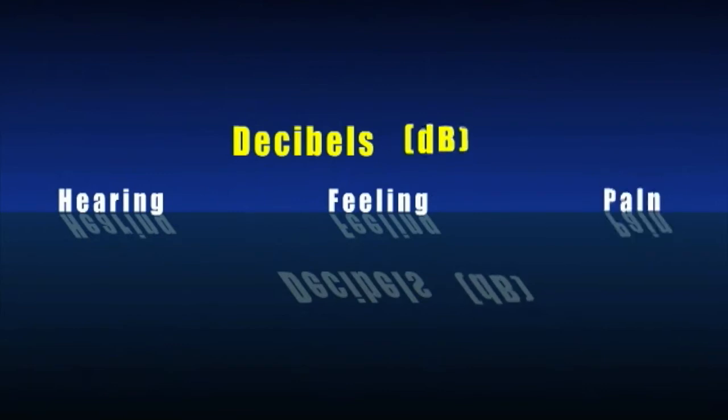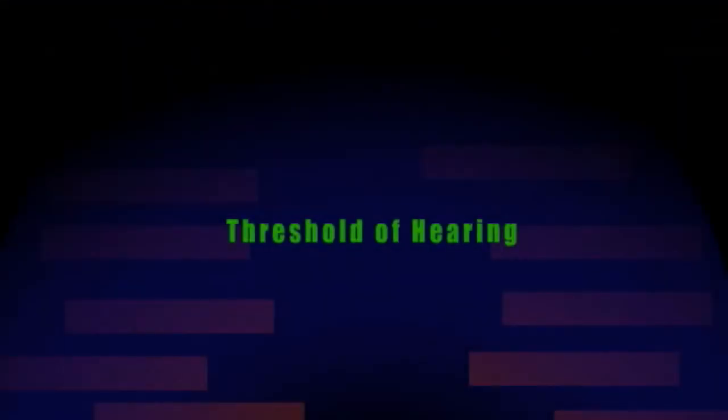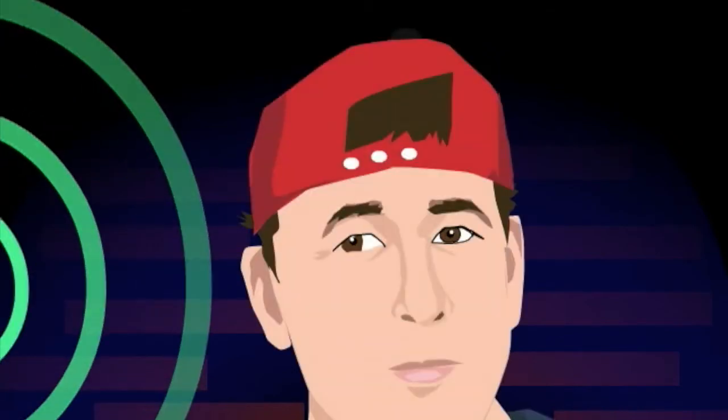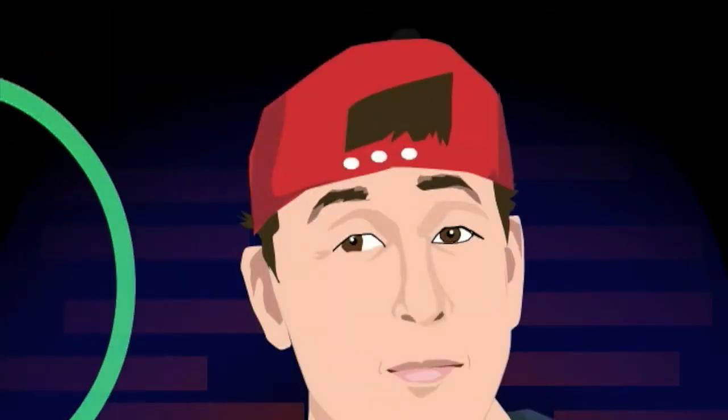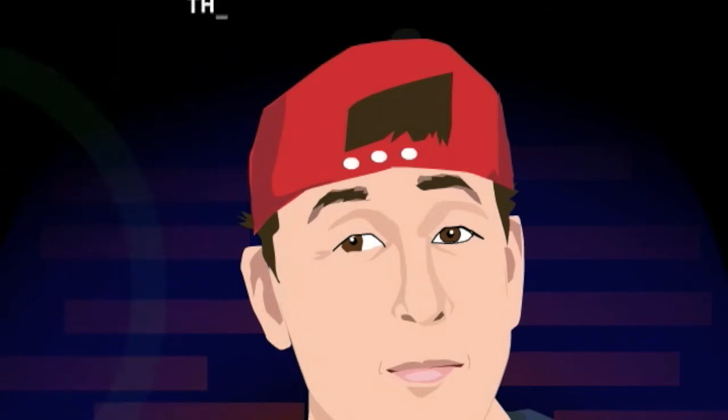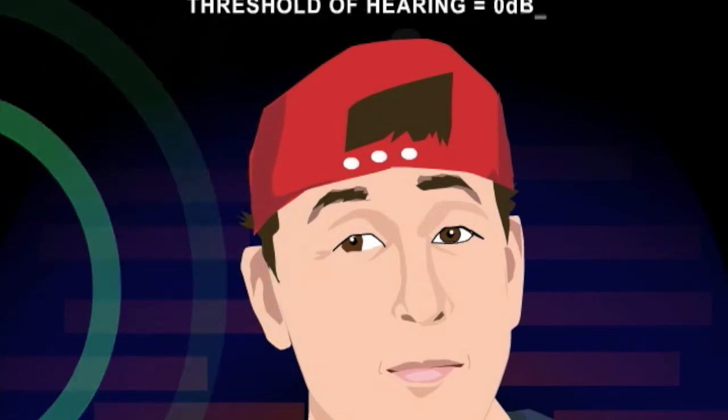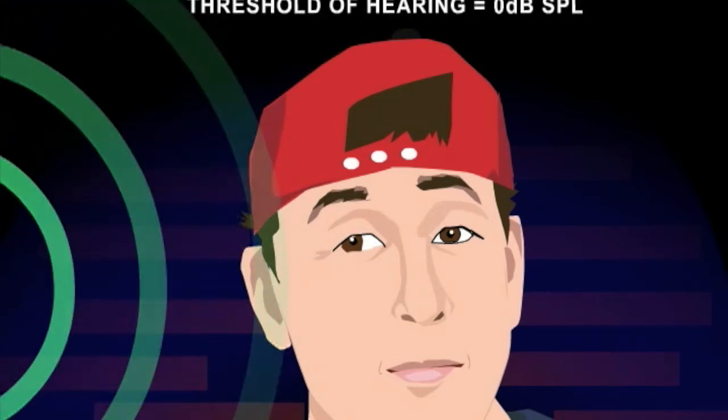Three decibel level thresholds to keep in mind are the threshold of hearing, feeling, and pain. The threshold of hearing is the level an average person can hear a specific frequency about half of the time. This level is noted to be 0 dB SPL or 0 decibels.